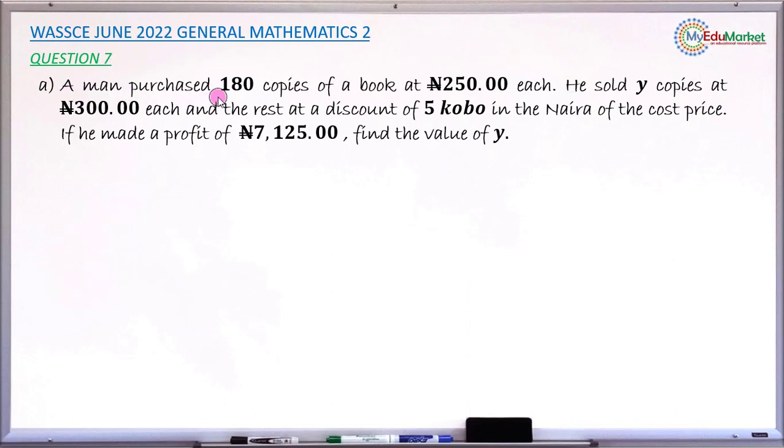The question says, Amon purchased 180 copies of books at 250 naira each. He sold Y copies at 300 naira each and the rest at a discount of 5 kobo in the naira of the cost price. If he made a profit of 7,125 naira, find the value of Y, that is the number of books that he was able to sell at 300 naira.